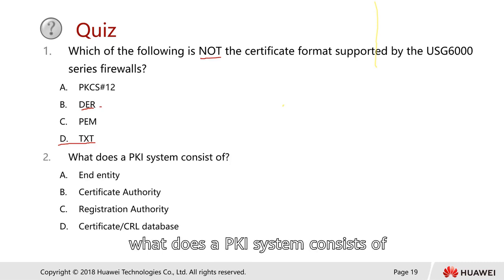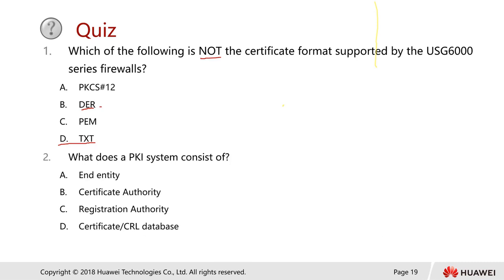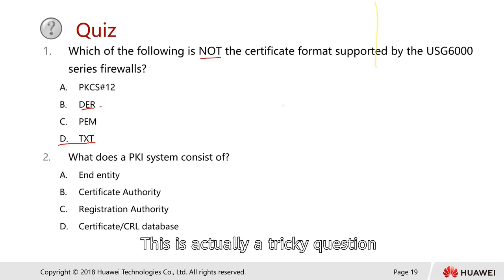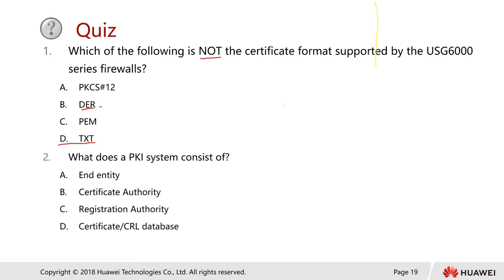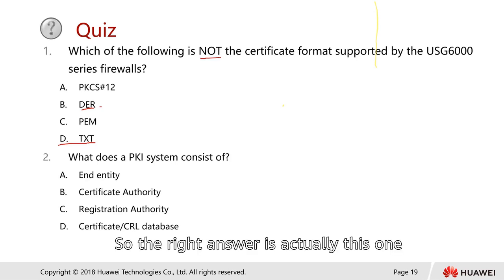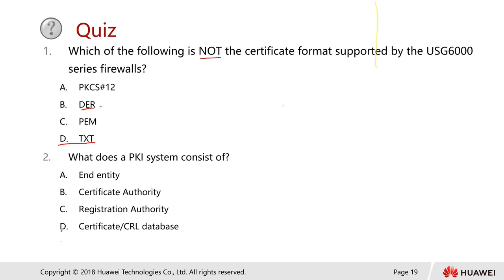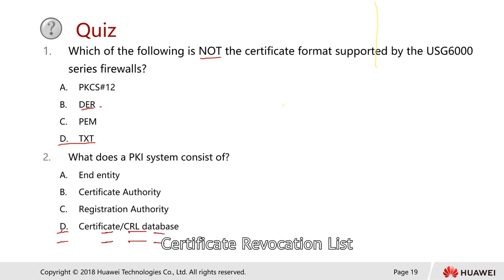The second question is: what does a PKI system consist of? This is actually a tricky question. The right answer is: certificate and the CRL database — Certificate Revocation List.